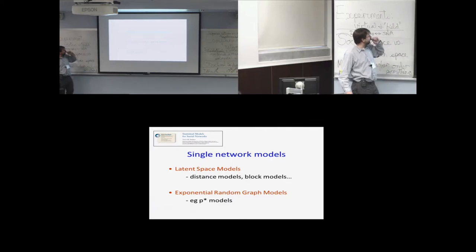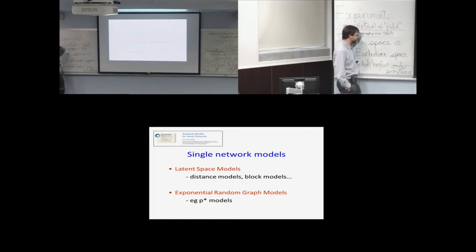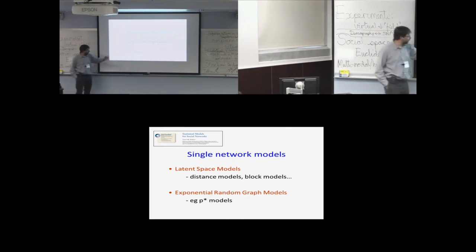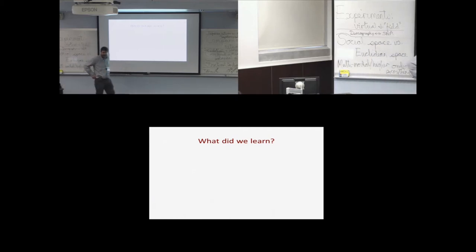So just to stay with Tom's paper for a bit. Among the single network models still static at this stage, there are various latent space models and then we've heard much more about exponential random graph models and all its various variants. So here's where I appear to be trying to say the same thing as my partner Darren, except rather than what did we learn about the biology of these things, I just wanted to share what through my stumbling and ignorance I think we learned about methodology.